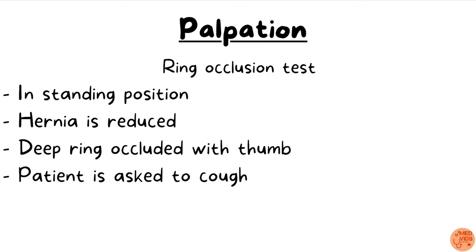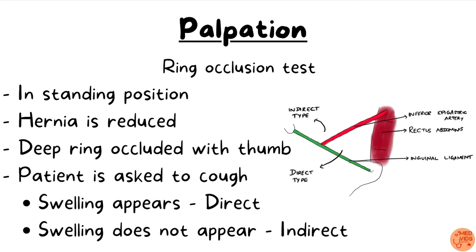The ring occlusion test is done in the standing position. First reduce the hernia — do not perform this test if the swelling is irreducible. Occlude the deep ring with the thumb (1.25 cm above the mid-inguinal point) and ask the patient to cough. If the swelling appears despite occlusion, it indicates direct inguinal hernia, since the deep ring — the site of origin of indirect hernia — is being blocked. If the swelling does not appear, it suggests indirect inguinal hernia.